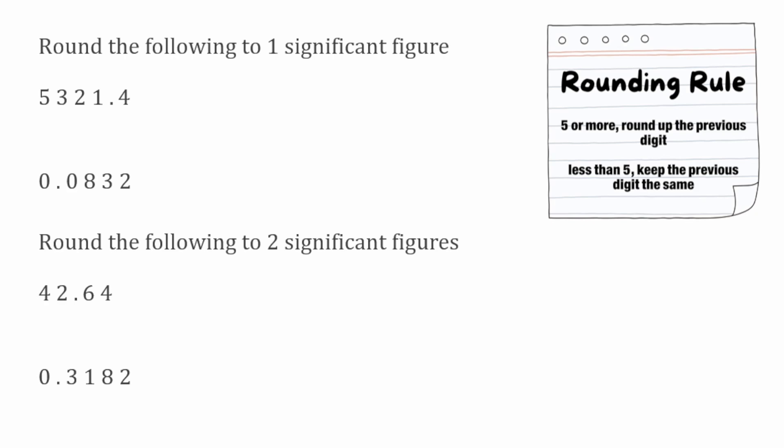For this first question we want to round 5321.4 to one significant figure. To find that first significant figure we're looking for that first digit that isn't a zero. In this first example our first significant figure would be the five. Because we're rounding to one significant figure, we're going to put our line down between the five and the three.